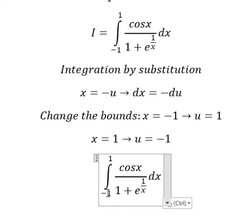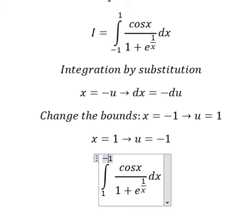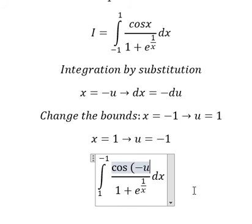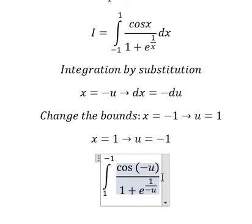So negative one becomes one, and one we change to negative one. x we change to negative u. This term we change to negative u, and dx we change to negative du.